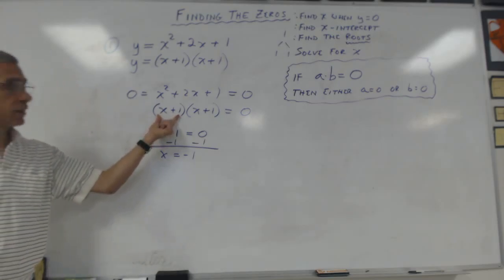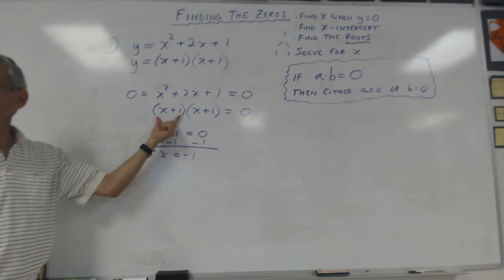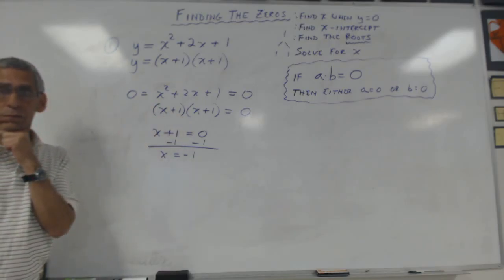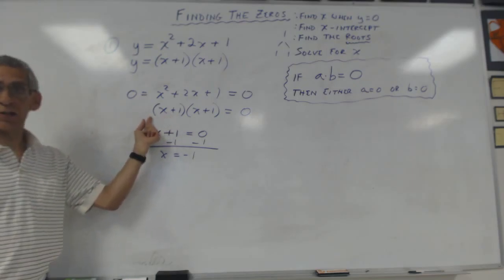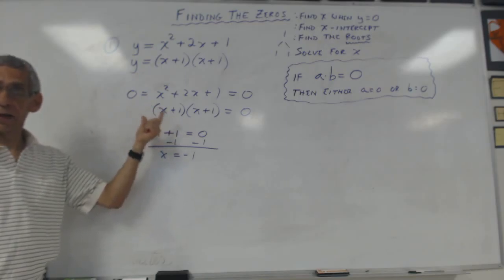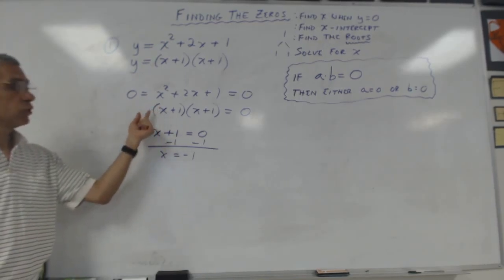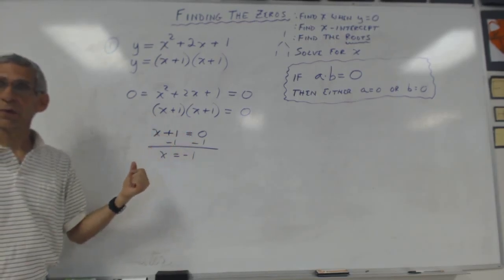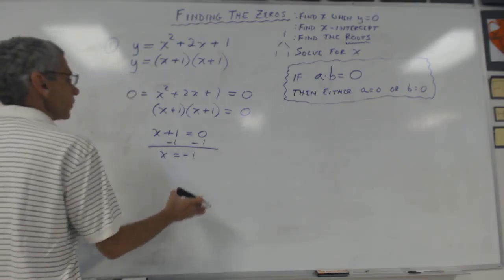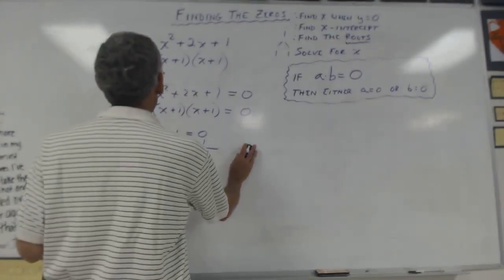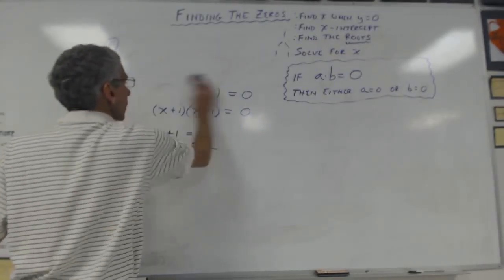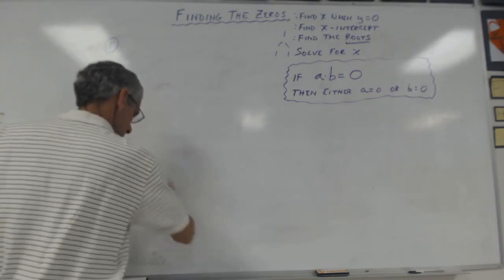You can just use the opposite of that number, because a number plus its opposite is zero. That works if it's just x plus something or x minus something. If it's 2x plus something, you have to do one extra step. I'll show you that. So we're not going to get into those quite yet, but I'll show you anyway.